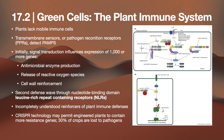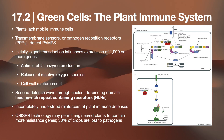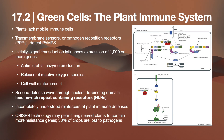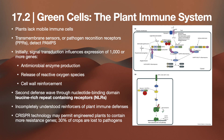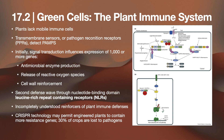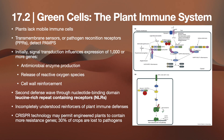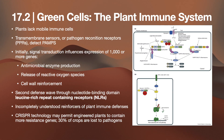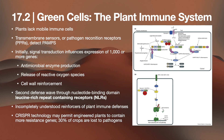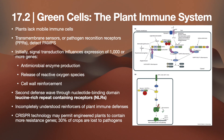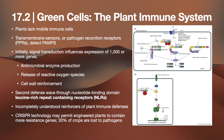Plants also have immune systems. Plants lack mobile immune cells but have transmembrane sensors — pathogen recognition receptors (PRRs) — that detect PAMPs. Initially a signal transduction influences the expression of a thousand or more genes, leading to antimicrobial enzyme production, release of ROS, and cell wall reinforcement. A second defense wave occurs through nucleotide-binding domain leucine-rich repeat-containing receptors (NLRs). CRISPR technology may permit engineering plants to contain more resistance genes, as 30% of crops are lost to pathogens.